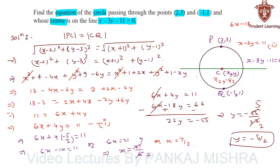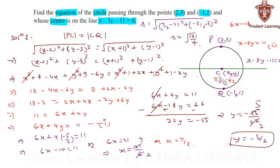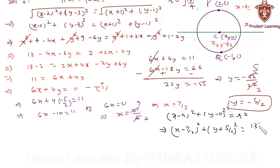Using the distance formula we can find distance PC, which gives the radius of the circle. So r equals under root of (7/2 minus 2) whole square plus (minus 5/2 minus 3) whole square. This gives the radius as under root of 131 over 4. Substituting into the standard form (x minus h)² plus (y minus k)² equals r², we get (x minus 7/2)² plus (y plus 5/2)² equals 131 over 4.